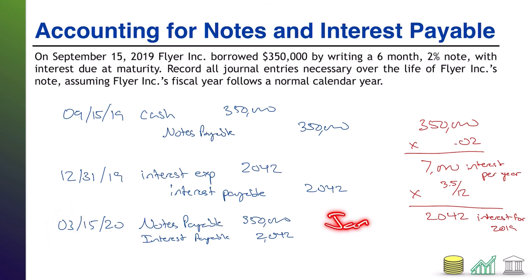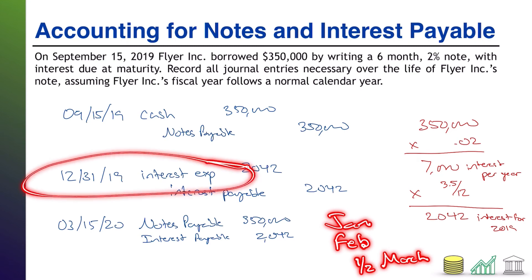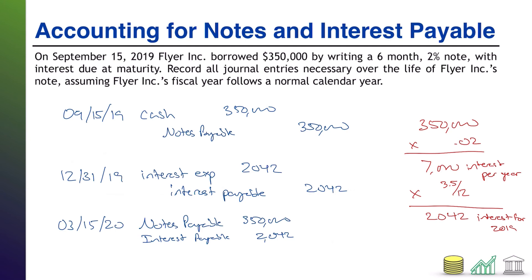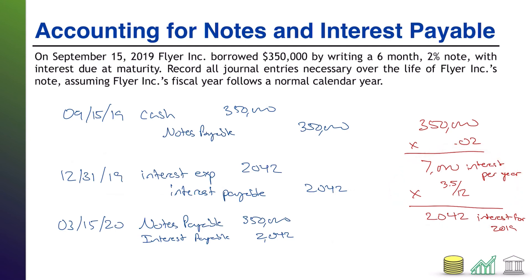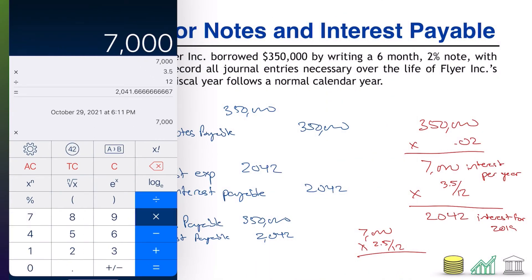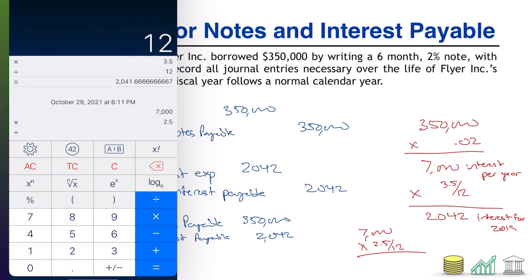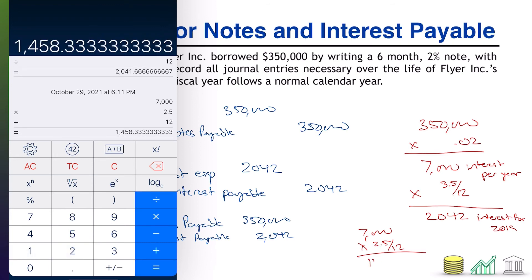It has only been the full month of January, the full month of February, and half of March since we recorded that interest expense on December 31st — so it has been two and a half more months. Just like we did the earlier calculation, we're going to do the same thing again: $7,000 per year times 2.5 out of 12 for two and a half months of interest. $7,000 times 2.5 divided by 12 comes out to $1,458.